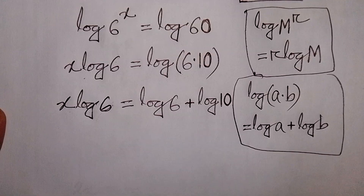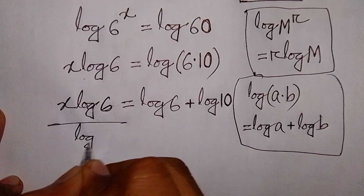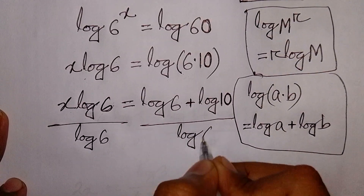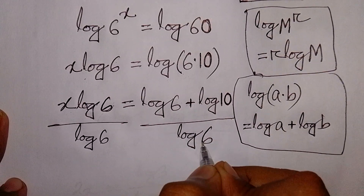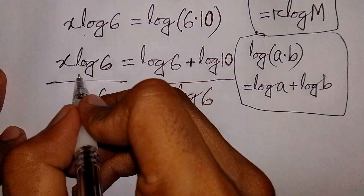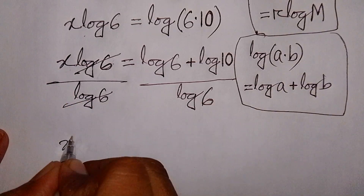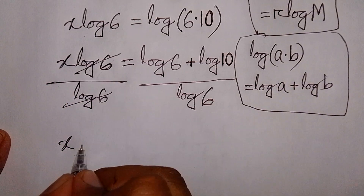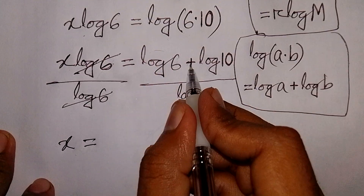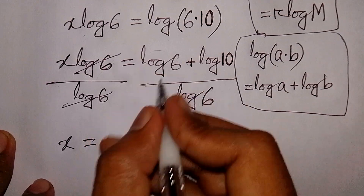Now we divide both sides by log 6. This log 6 and this log 6 will be cancelled. So x is equal to the remaining part: log 6 plus log 10, all over log 6.